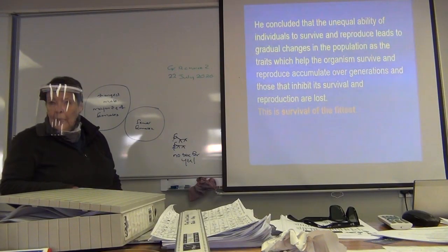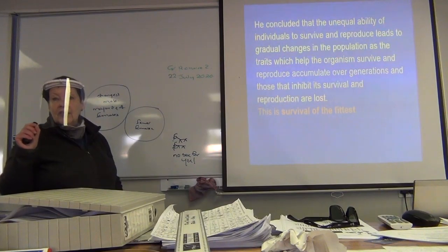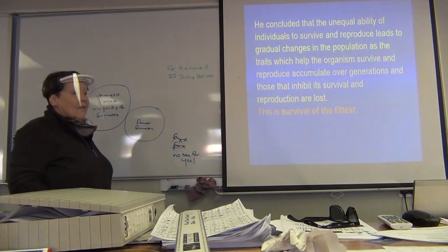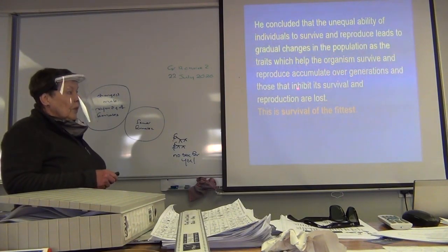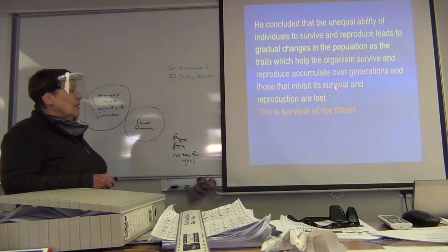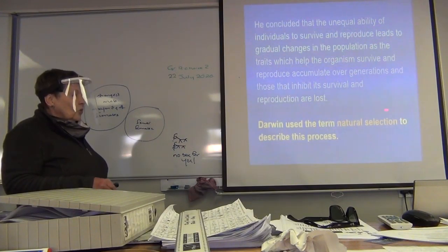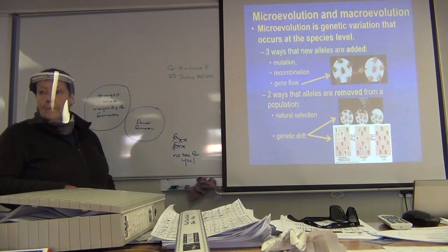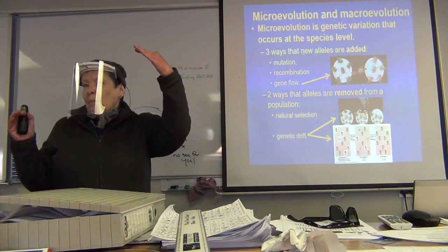Just to summarize, survival of the fittest is that caused by only the strongest reproducing? Yes, or the strongest reproducing more than individuals that aren't as strong. Darwin concluded that the unequal ability of individuals to survive and to reproduce leads to gradual changes in the population as the traits which help the organism survive and reproduce accumulate over generations. And those that inhibit its survival and reproduction are lost, and that's survival of the fittest. Darwin used the term natural selection to describe this process. Survival of the fittest is natural selection, and it's also the same thing as descent with modification.